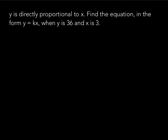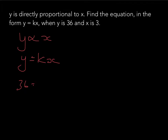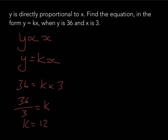Let's have a look at another question to make sure we've got the hang of this. We've got y is directly proportional to x, so the next step straightaway is y equals kx. We substitute in the values: 36 equals k times 3. So 36 divided by 3 equals k, meaning k equals 12. Therefore the equation is y equals 12x.